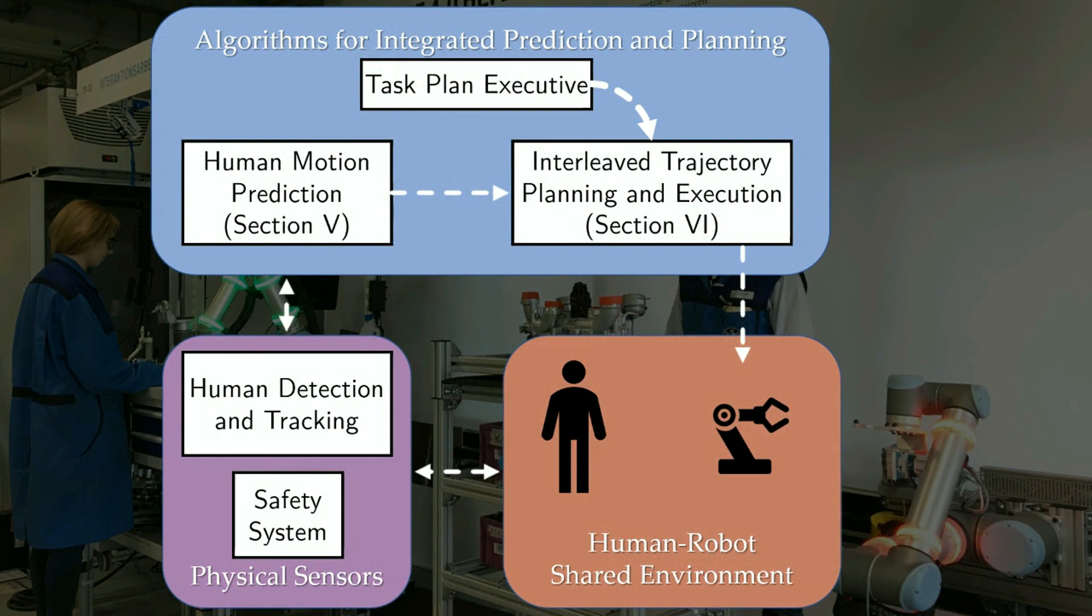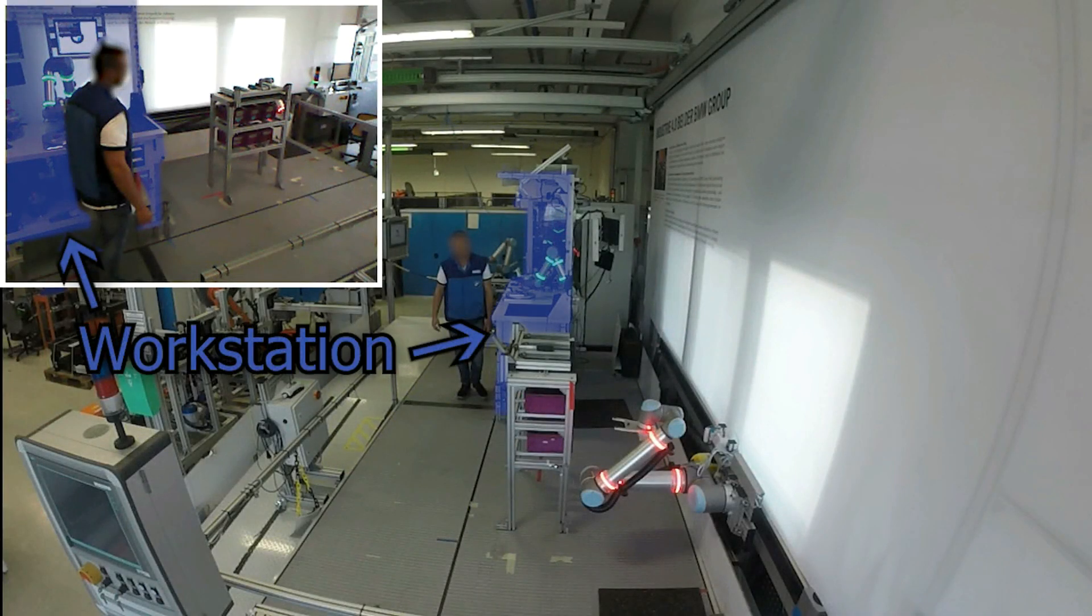To the best of our knowledge, our human-aware robotic system is the first to integrate prediction and planning for operations in automotive final assembly. We demonstrate our system in a BMW test environment.